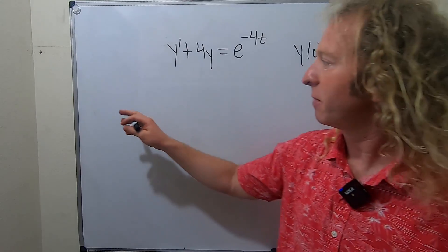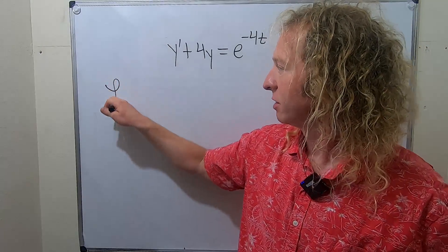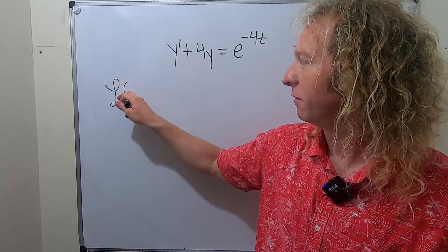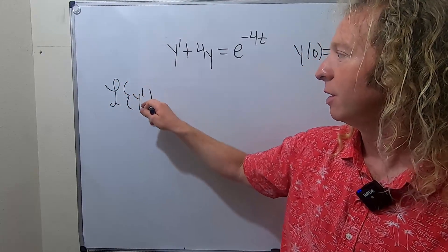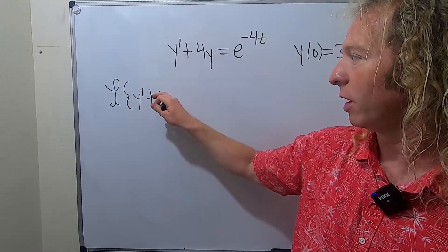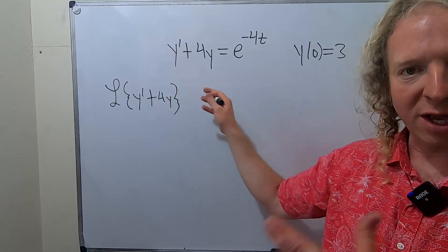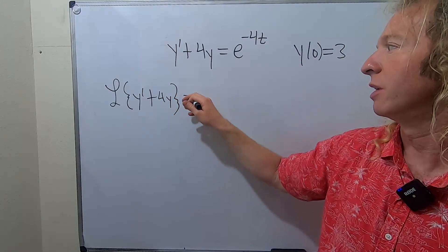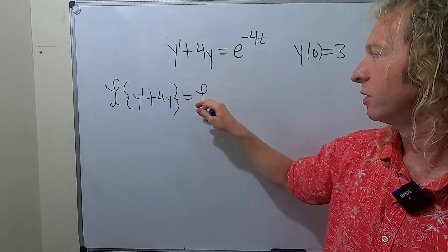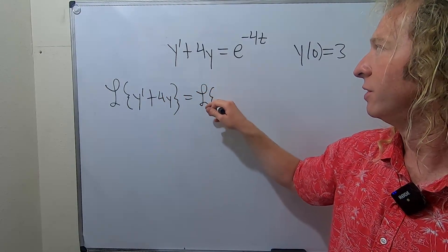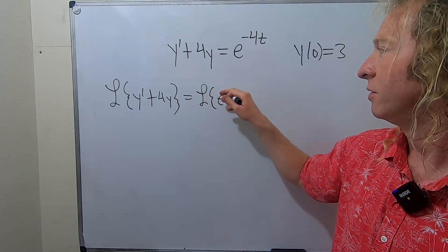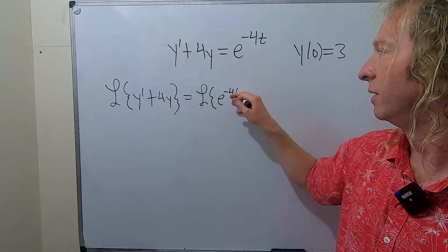We start by taking the Laplace of the left-hand side — so y prime plus 4y — and that's equal to the Laplace of the right-hand side, which is the Laplace of e to the negative 4t.